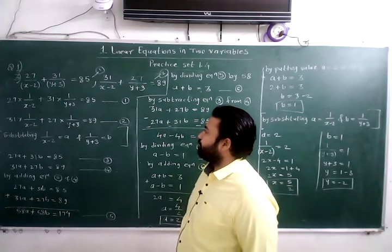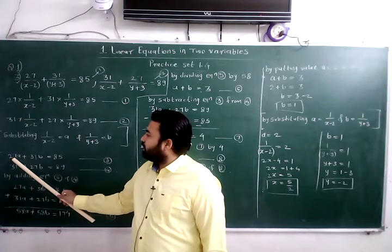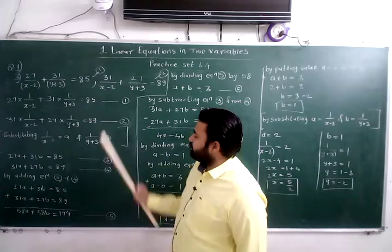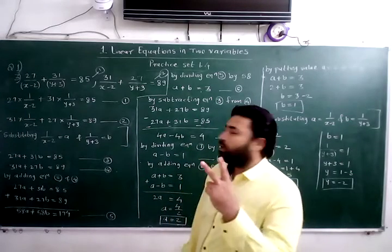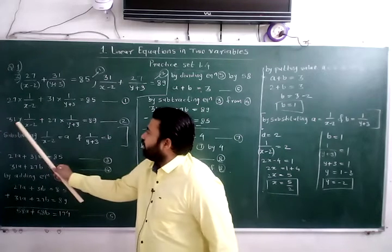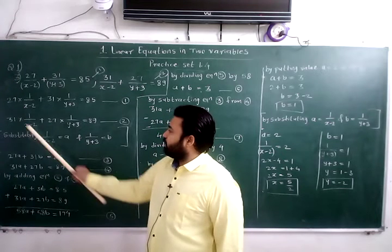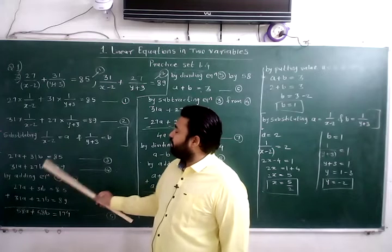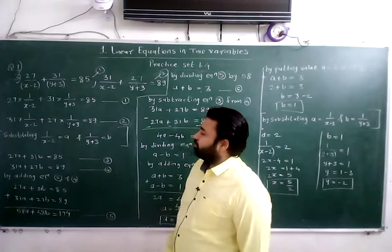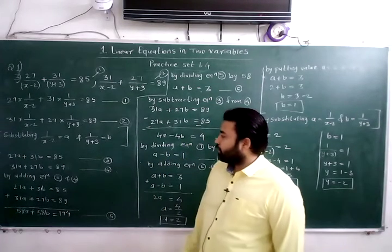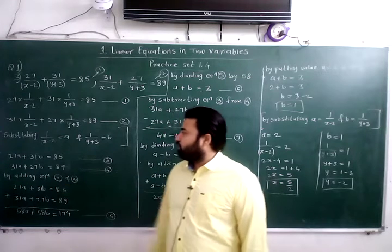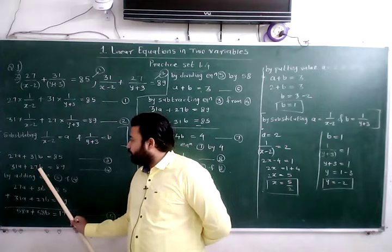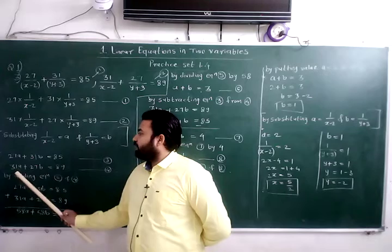Now equation 1 becomes equation 3: 27a plus 31b is equal to 85. And equation 2 becomes equation 4: 31 upon (x minus 2) — substituting a — gives 31a plus 27b is equal to 89. Now notice in these two equations the coefficients: in equation 3, the coefficient of a is 27 and the coefficient of b is 31; in equation 4, the coefficient of a is 31 and the coefficient of b is 27.